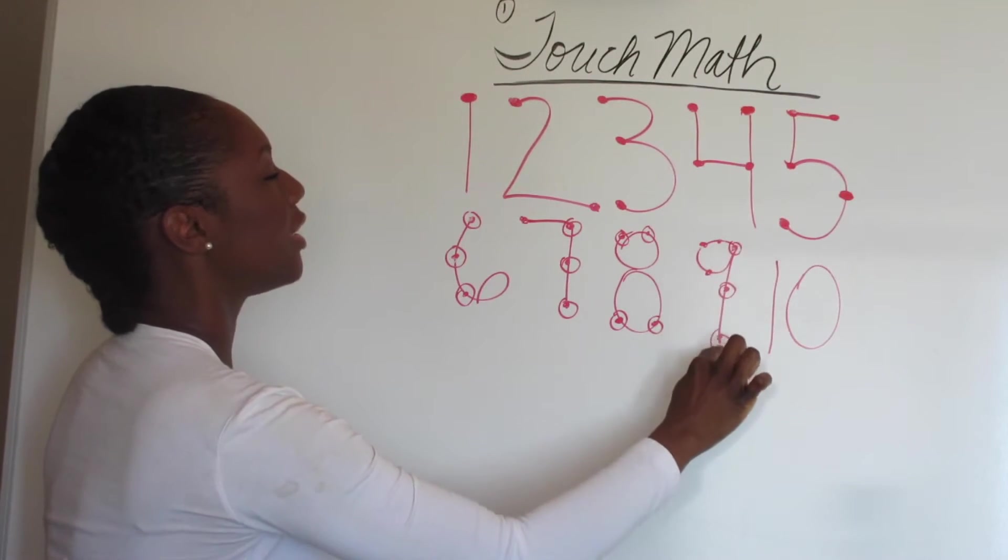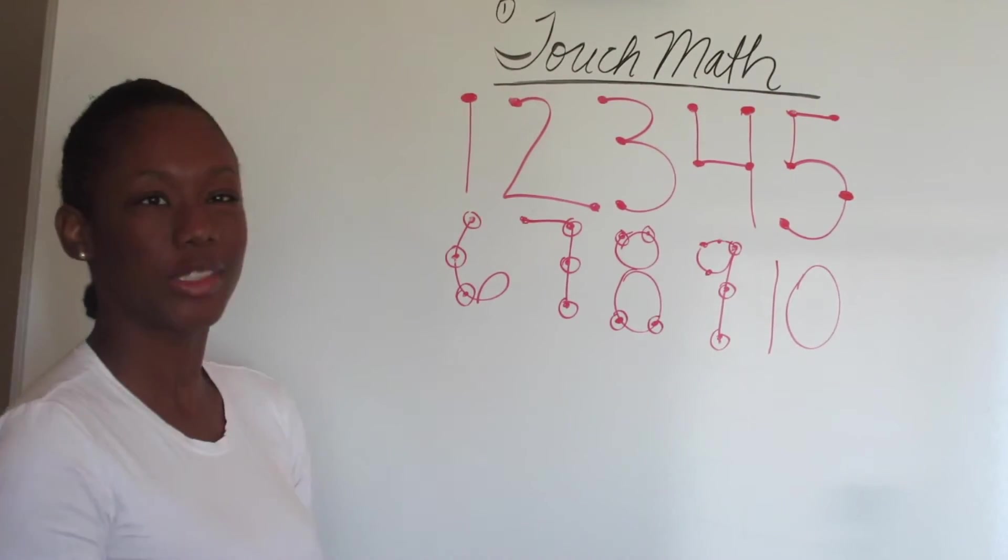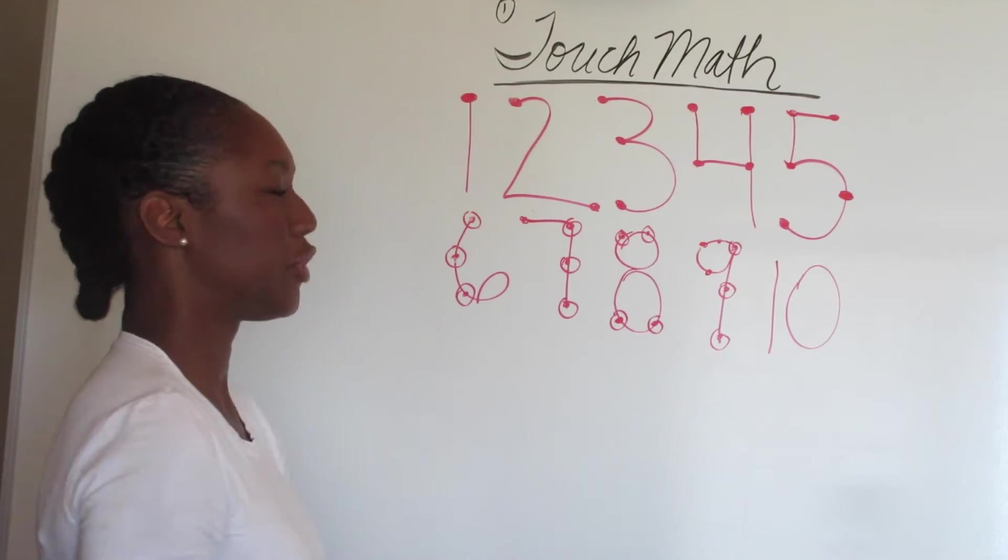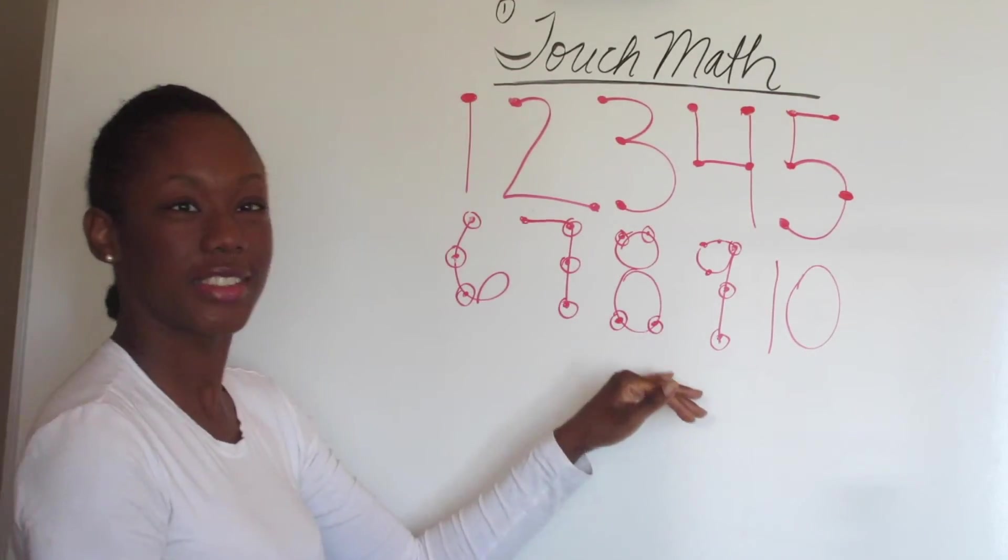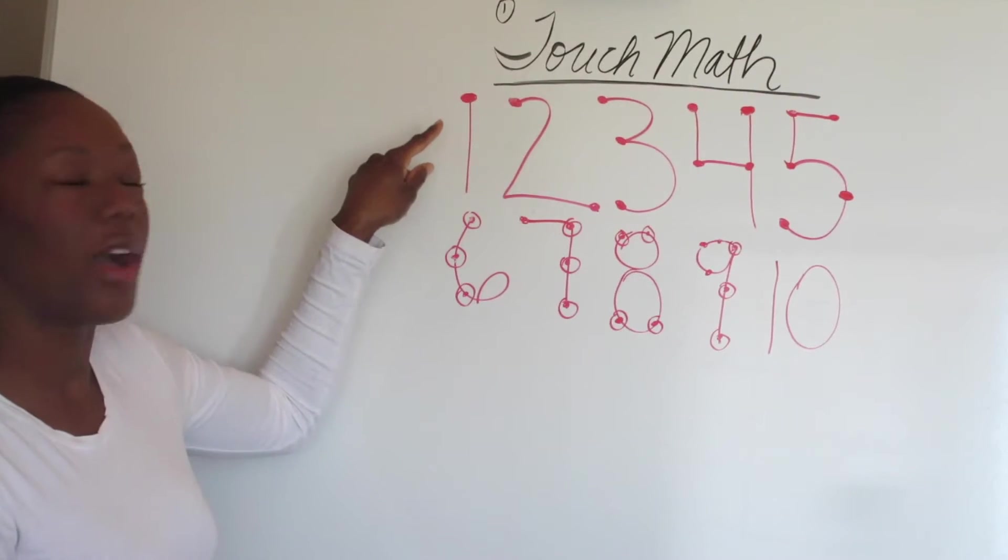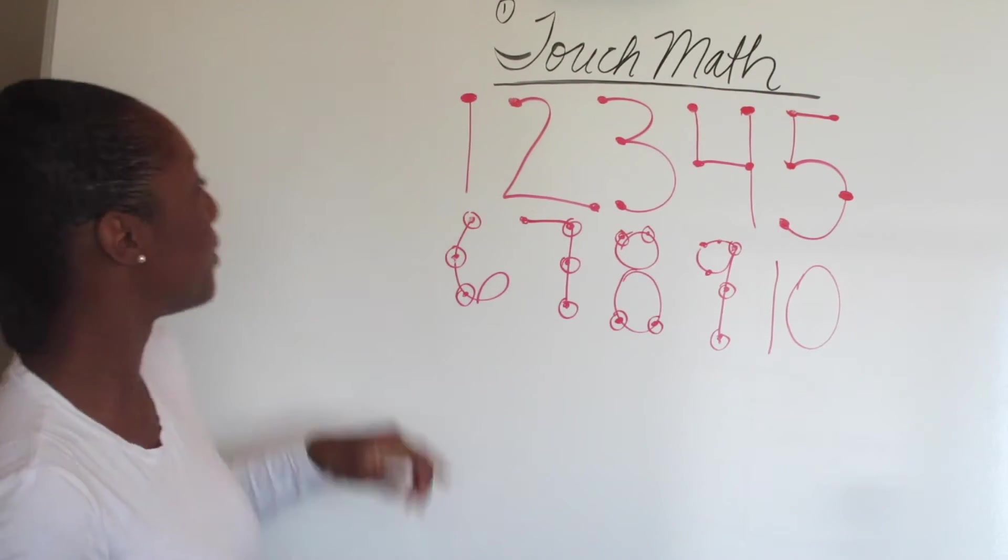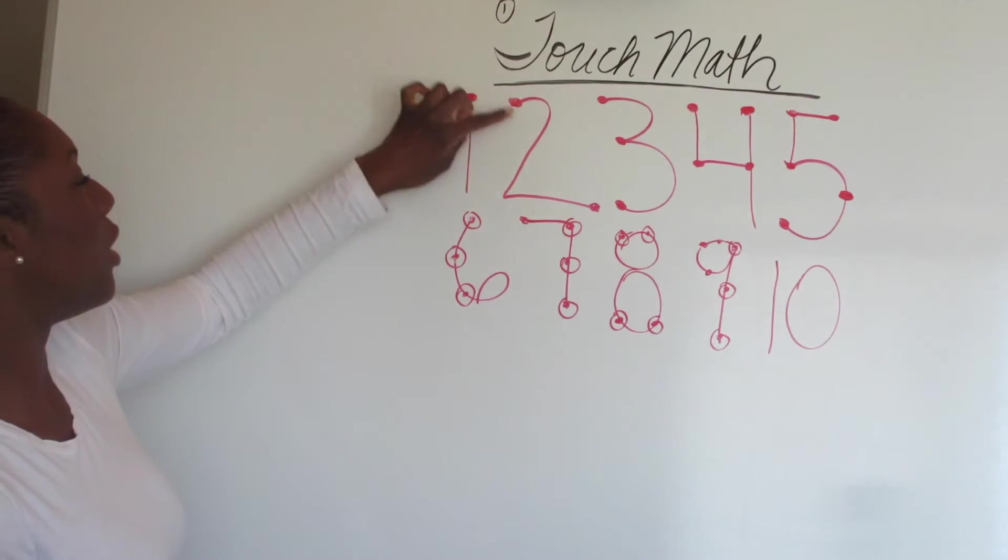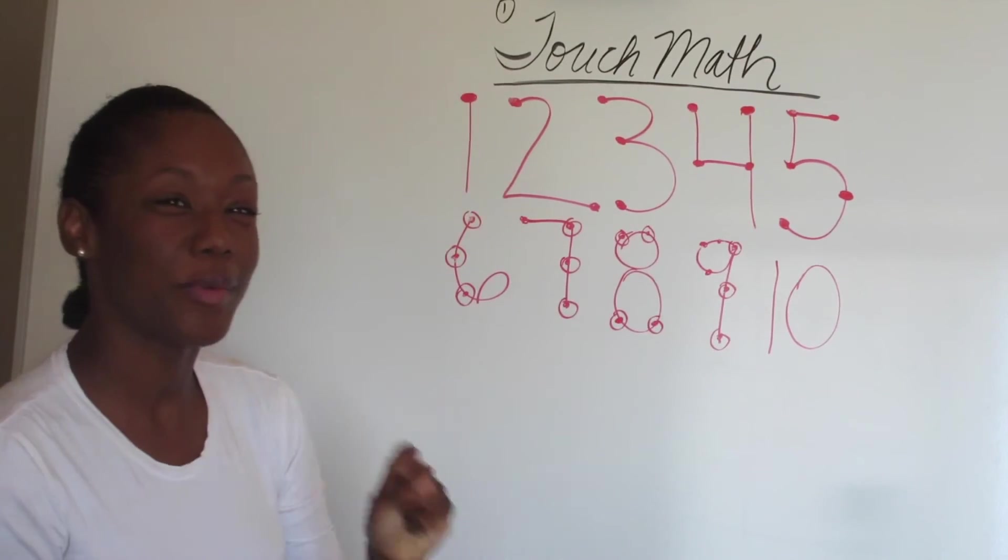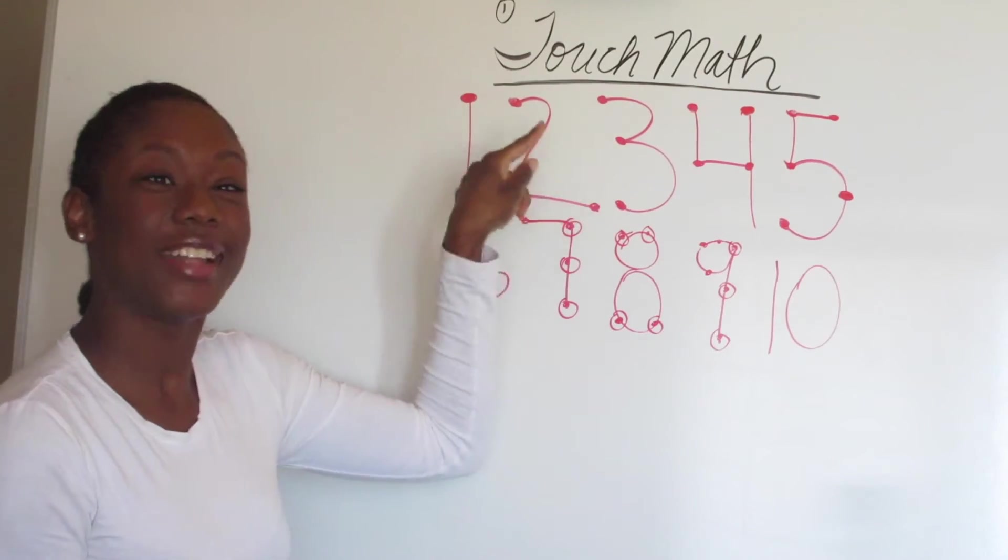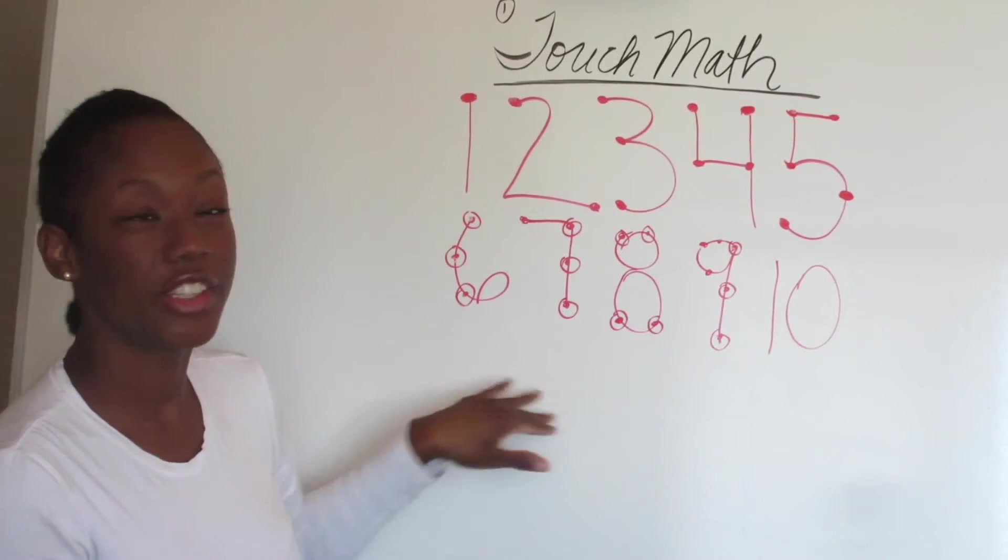So you count these twice and then count those once. And ten has no dots because you can always just start with ten. Now you have to memorize this. That's the point, that's the rule. Memorize where these dots are and that will stop you from counting on your fingers. Look at these numbers and every time you see a number you see that dot on the number. Memorize where these dots go and you're set.